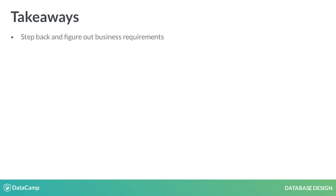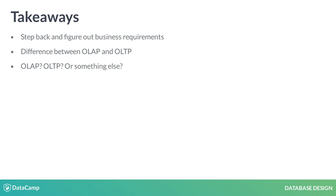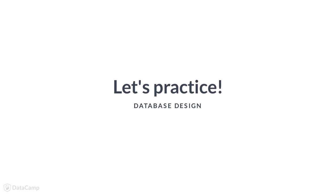To wrap up, here's what you should take away from this video. Before implementing anything, figure out your business requirements because there are many design decisions you have to make. The way you set up your database now will affect how it can be effectively used in the future. Start by figuring out if you need an OLAP or OLTP approach, or perhaps both. These are the two most common approaches; however, they are not exhaustive, but they are an excellent start to get you on the right path to designing your database. In later videos, we'll learn more about the technical differences between both approaches. Okay, let's do some exercises.